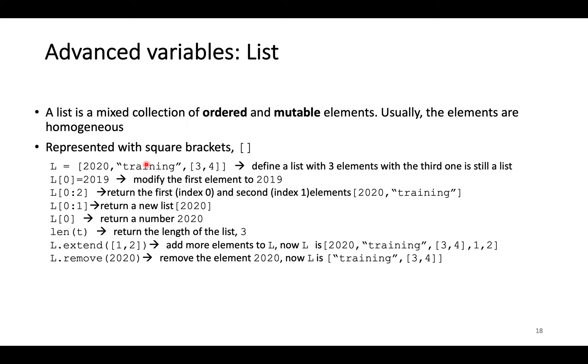The elements in a list are ordered. Therefore, we are able to index elements starting from 0. Here is to select the first element. We can also select a continuous part of lists through slicing. Notice, in slicing, the final index will not be included. So, here it is to select the elements with index 0 and index 1.